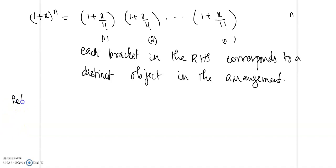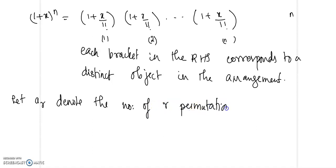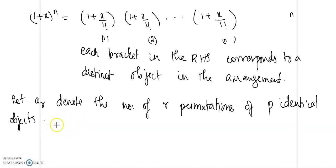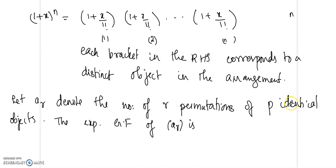Let A_r denote the number of r-permutations of P identical objects. Let us look for the exponential generating function of A_r. We are given P identical objects, so r can take any value from 0, 1, up to P. The corresponding exponential generating function will be given by the following.